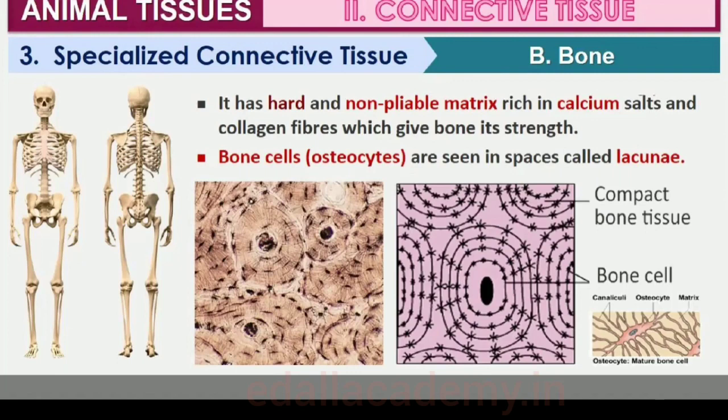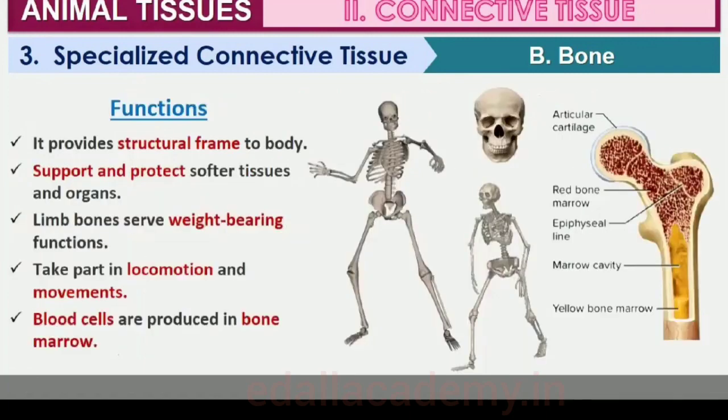Bones have a hard and non-pliable ground substance rich in calcium salts and collagen fibers which give bone its strength. It is the main tissue that provides structural frame to the body, supporting and protecting softer tissues and organs. The bone cells, osteocytes, are present in spaces called lacunae. Limb bones serve weight-bearing functions and interact with skeletal muscles to bring about movements. The bone marrow in some bones is the site of production of blood cells.